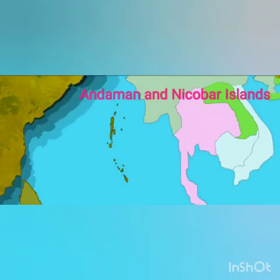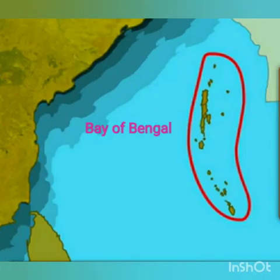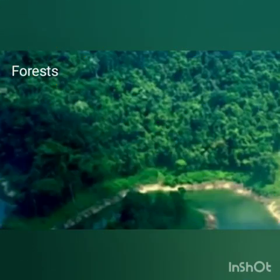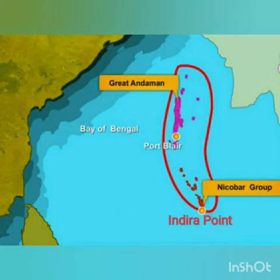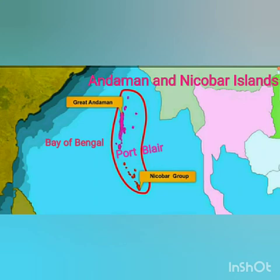There are about 300 islands that form the Andaman and Nicobar island group. Most of them are forested and people live in only a few of them. The northern part is Andaman and the southern part is Nicobar. The southernmost point of this island group is called the Indira Point, which is also the southernmost point of India. Port Blair is the capital of this union territory.